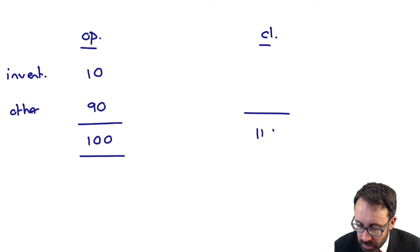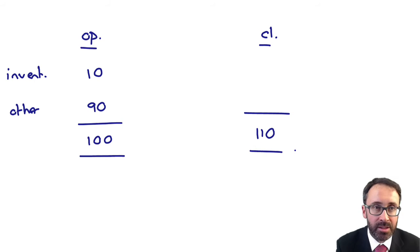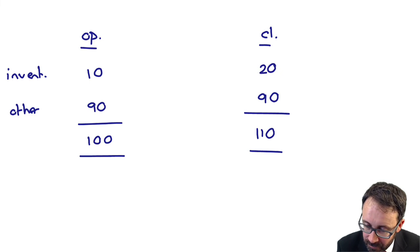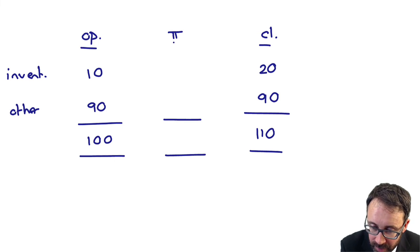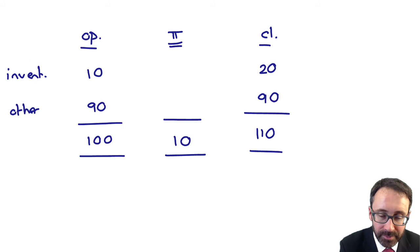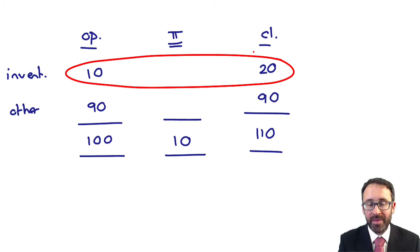The closing was 110, wasn't it? The others still are at 90. If that's the case, the inventory must be at 20. We're saying that the profit figure that we have is 10.